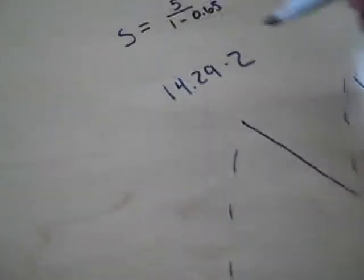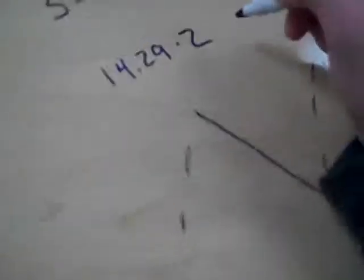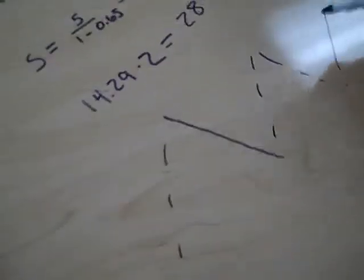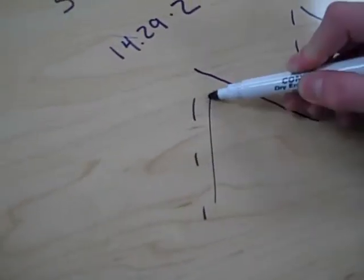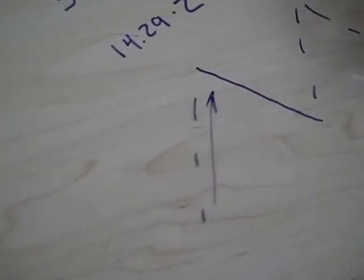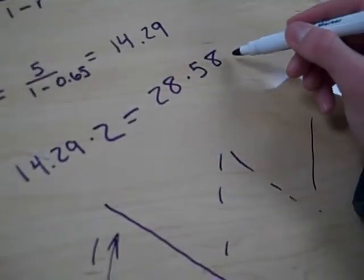So, when we double 14.29, we get 28.58. But since the basketball didn't start from the ground and go up 5 feet, we have to subtract 5 from this answer.